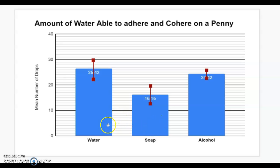Same is true for alcohol. We are confident that alcohol holds more water drops on a penny than soap does. But that's not the same for water and alcohol. Their means, while the mean or average value we calculated is different, there's overlap between them.